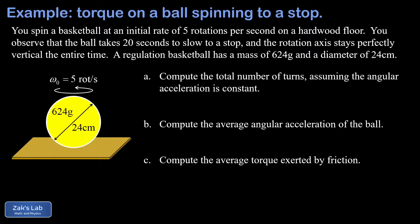In this video we're solving a rotational dynamics problem where we're observing a ball that's initially set spinning at five rotations per second and it spins to a stop over the course of 20 seconds. We're given the specs on this as a regulation basketball: it has a mass of 624 grams and a diameter of 24 centimeters, and we're asked a series of kinematic and dynamic questions.